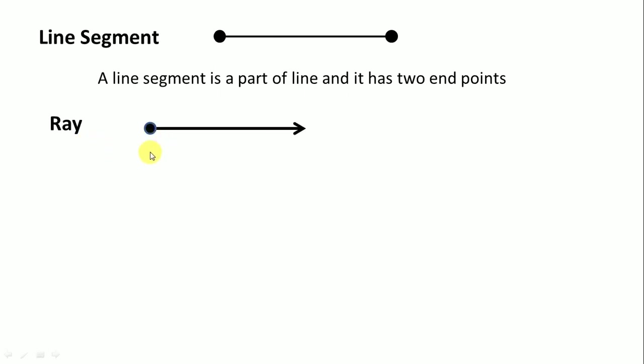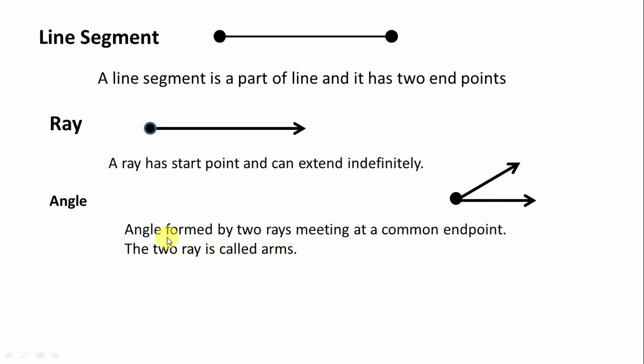Ray. Here is ray. A ray has starting point and can extend indefinitely. The arrow shows it can extend indefinitely or infinitely. Next is angle. Angle is like this. Angle formed by two rays meeting at common end point. Here is two rays meeting at a common point. The two rays are called arms.